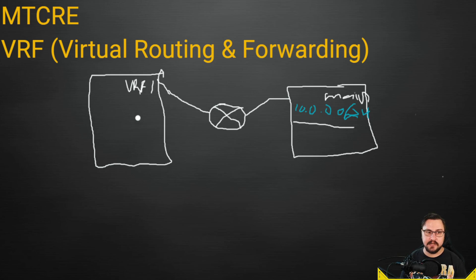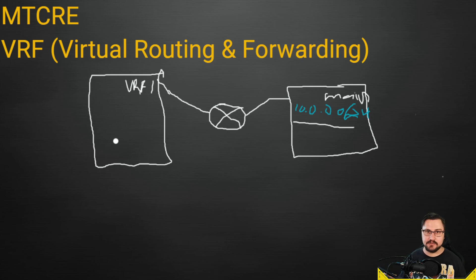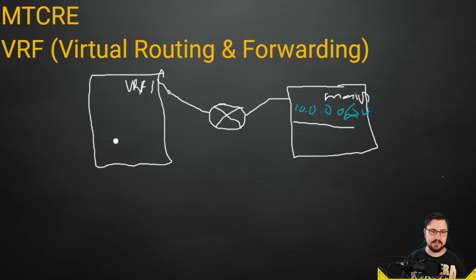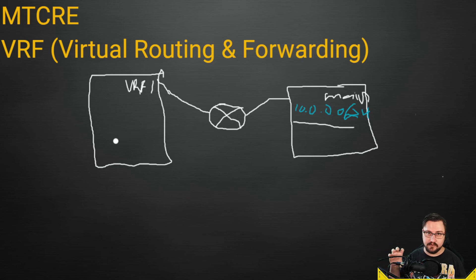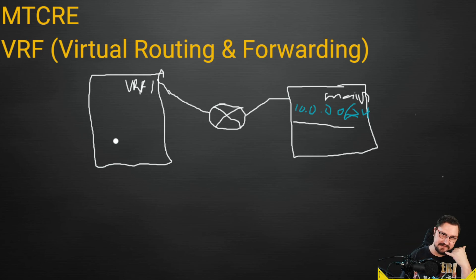VRFs fix that by allowing you to create a VRF for each customer — their own routing instance or routing cloud — so overlapping subnets exist but stay in their own VRF and won't know about each other. No packets are forwarded between different VRFs because everything sticks to its own cloud. The easiest comparison for VRFs is VLANs: with VLANs you tag a port so only devices in that VLAN communicate with each other. VRFs do the same thing but at Layer 3, on an IP address level.